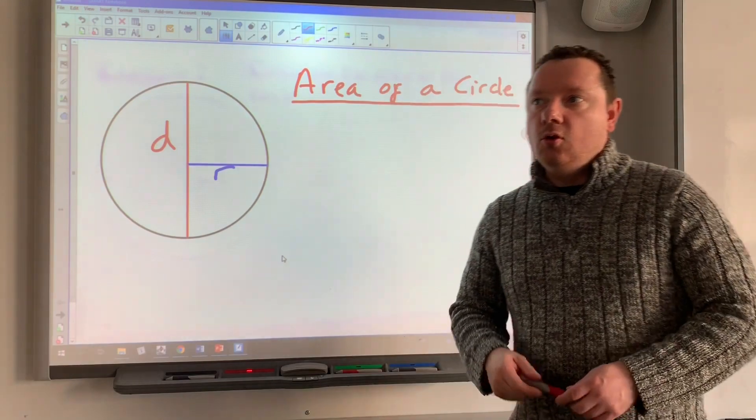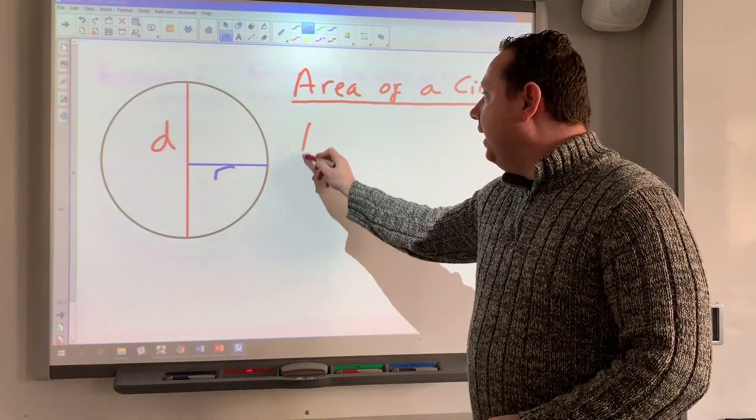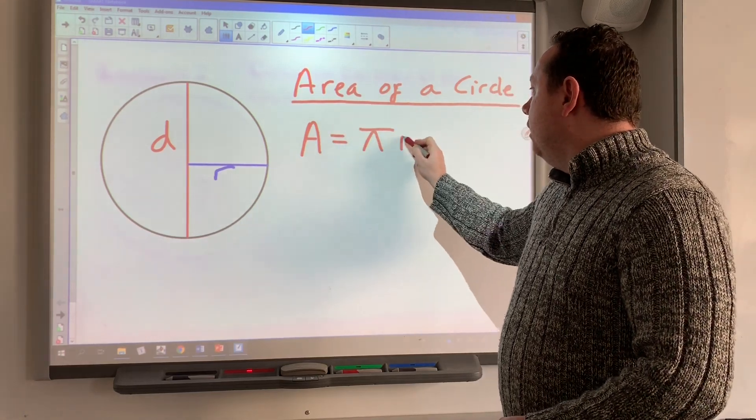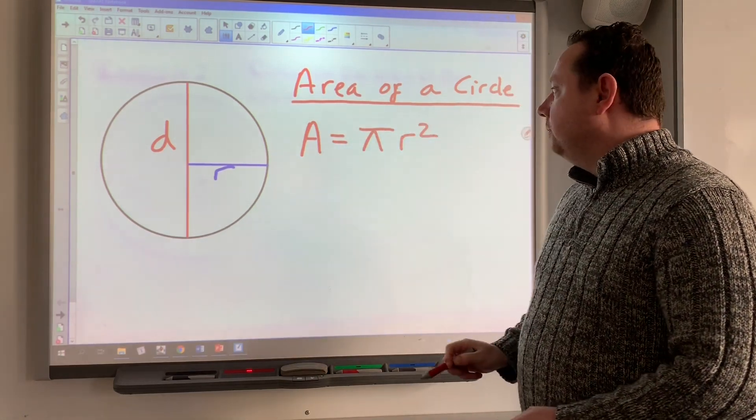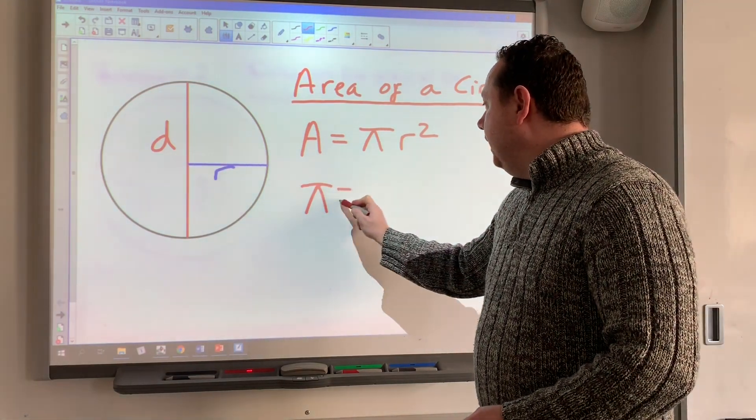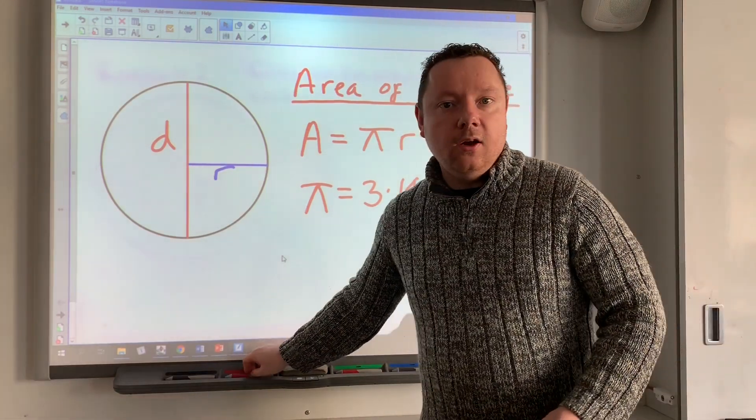To find the area of a circle, we're going to use the formula A = πr². Remember, π is the number 3.14, and it's a button on the calculator.